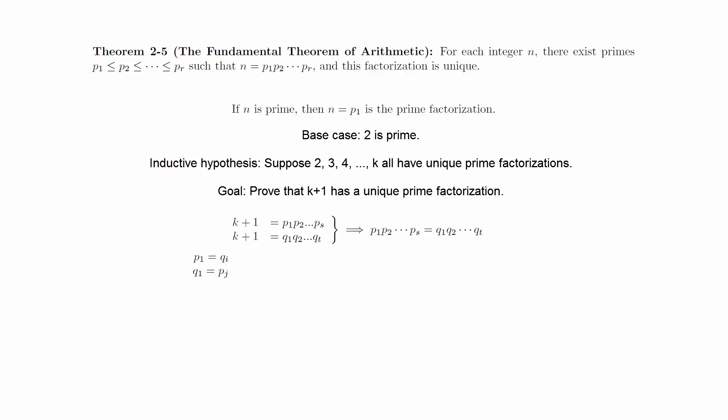Since the products are in increasing order, we must have these inequalities. But by combining them together, we get this, which shows that p sub 1 and q sub 1 must be equal. This means that we can cancel these terms out to get a factorization of a number smaller than k plus 1.